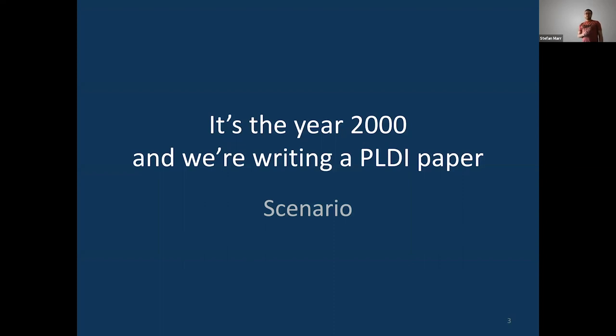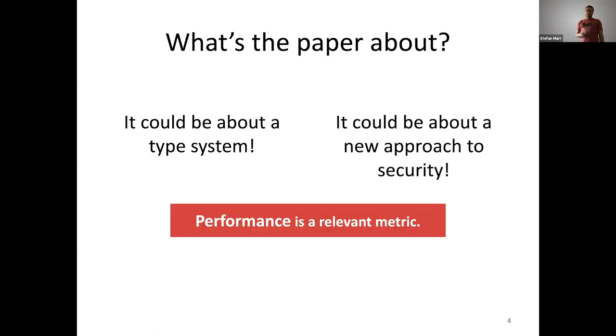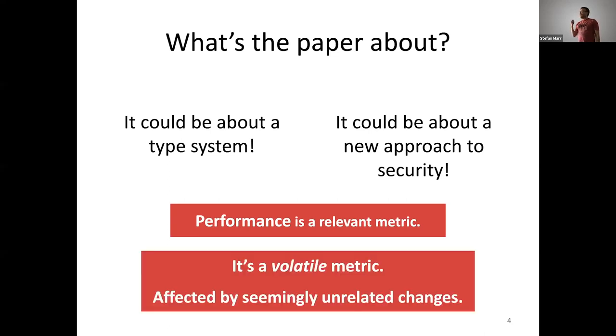So what could the paper be about? Well, it could be about possibly a new type system. A lot of people think about making programs more correct by using type systems. Another thing we could think about is a new way to solve security. Perhaps somebody has a brilliant insight that can prevent in 2000 already things like meltdown and Spectre. Of course, many of these things would be related to performance in one way or another. And often in these systems that we talk about, like virtual machine language implementations, performance turns out to be some form of volatile metric.